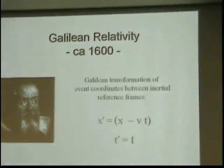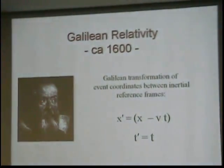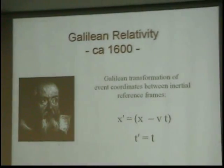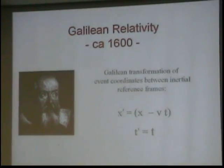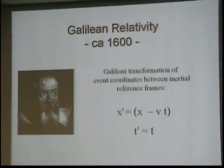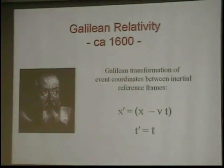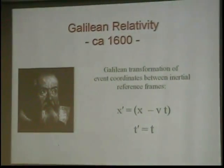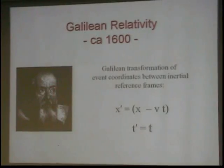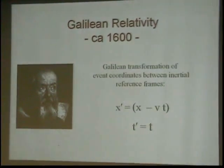Relativity was not born with Einstein. Galileo realized that it is the symmetry of motion — at a different level, the level of classical physics — that defines modern physics. And it's built into the principle of inertia, Newton's first law.